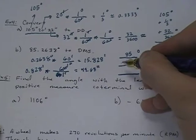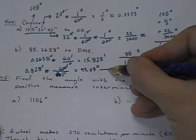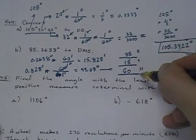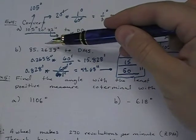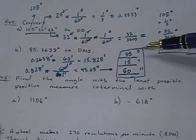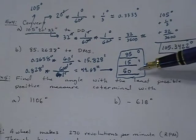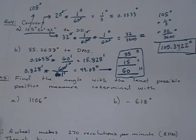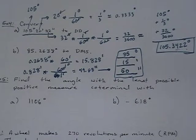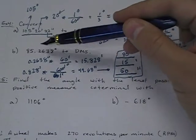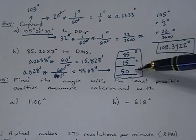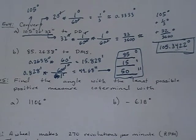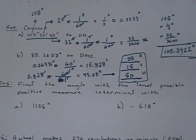49.68 seconds — typically when we use DMS notation we round to the nearest whole number, so I'll call that 50 seconds. So 85.2638 degrees is 85 degrees, 15 minutes, and 50 seconds, to the nearest whole second. The concept that you had 85 and some change equals 85 and some change is very important in DMS notation.